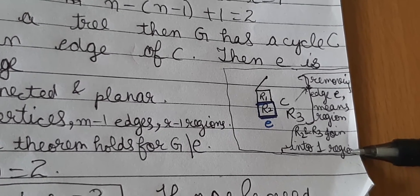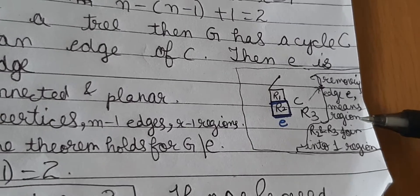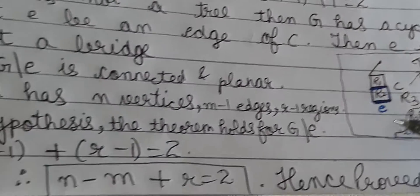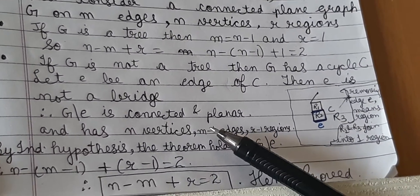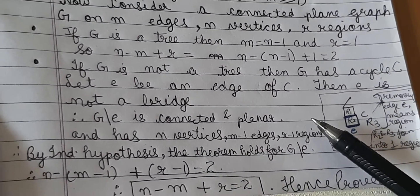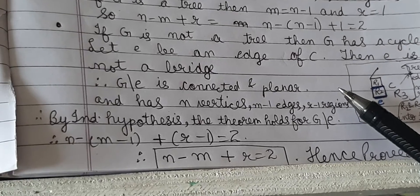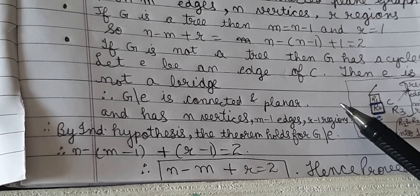And in general, removing an edge of a cycle in a plane graph will just decrease the number of regions by 1. Thus by the inductive hypothesis, the theorem holds for the graph G without e. Remember G without e is a connected and planar graph and has fewer than m edges.